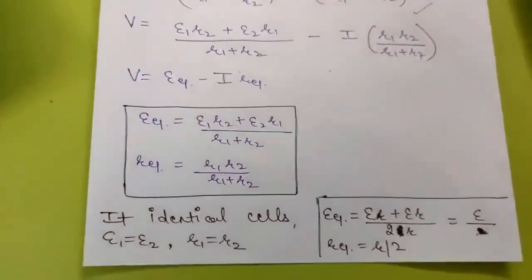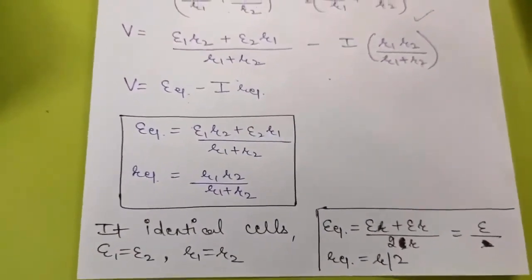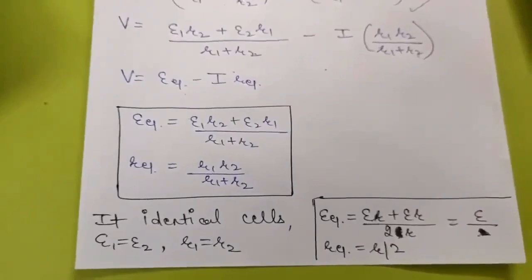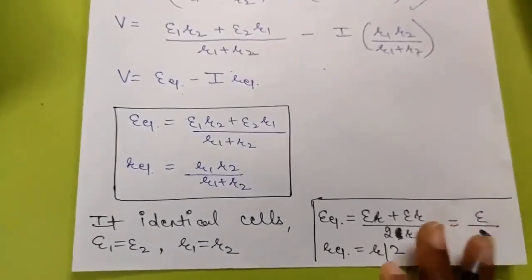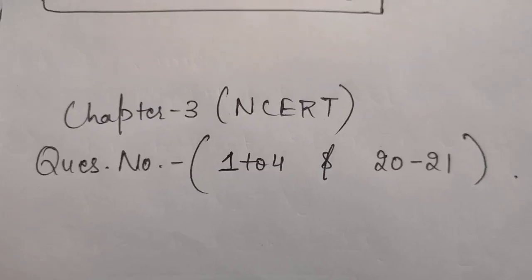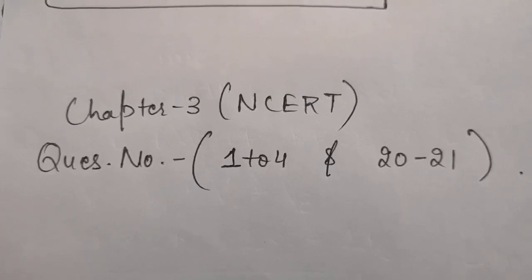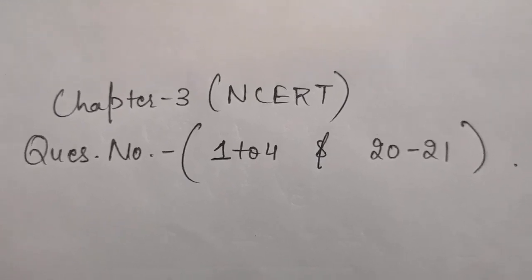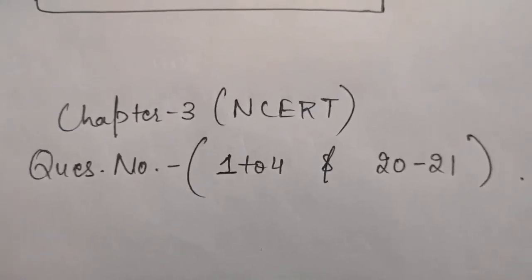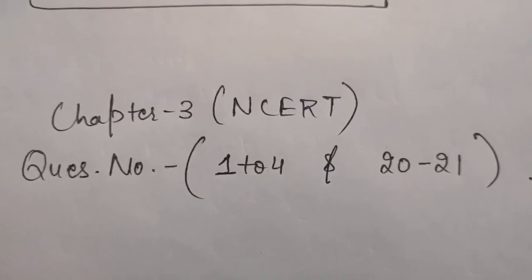In today's lecture, we have studied series combination of resistances, parallel combination of resistances, and series and parallel combination of cells. After studying these topics, you can do questions from chapter number 3 NCERT: question number 1 to 4, and questions 20 and 21. Thank you.